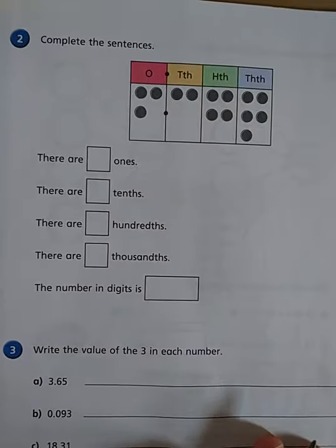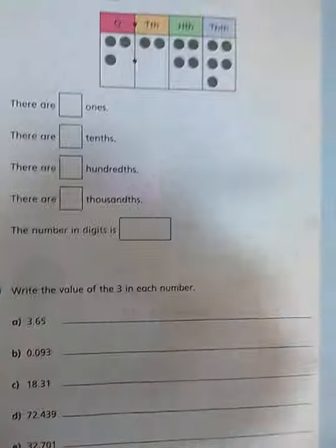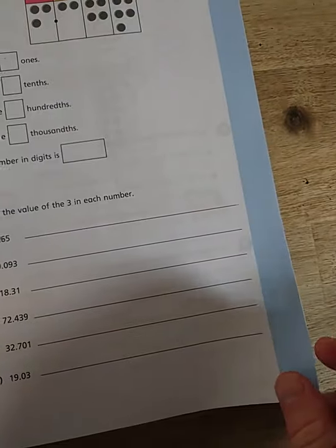So here's another pictorial version with the counters. How many ones are there? Well, there's three ones. How many tenths? How many hundredths? How many thousandths? Fairly straight number.